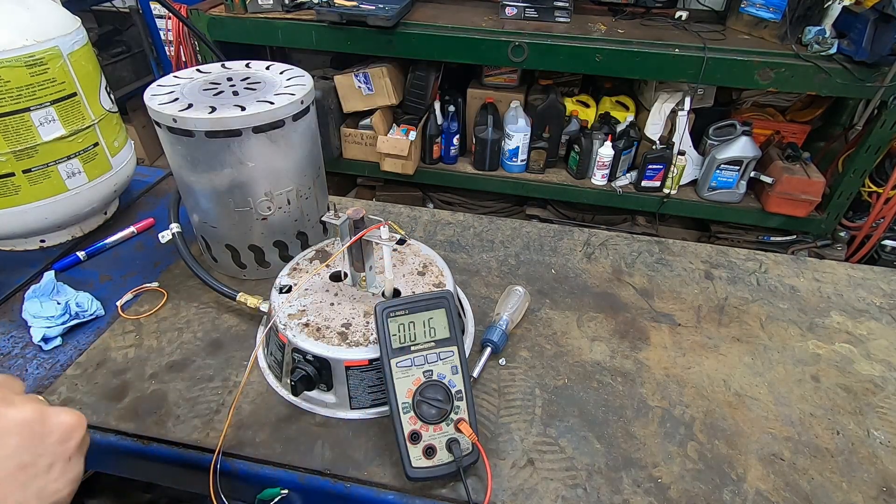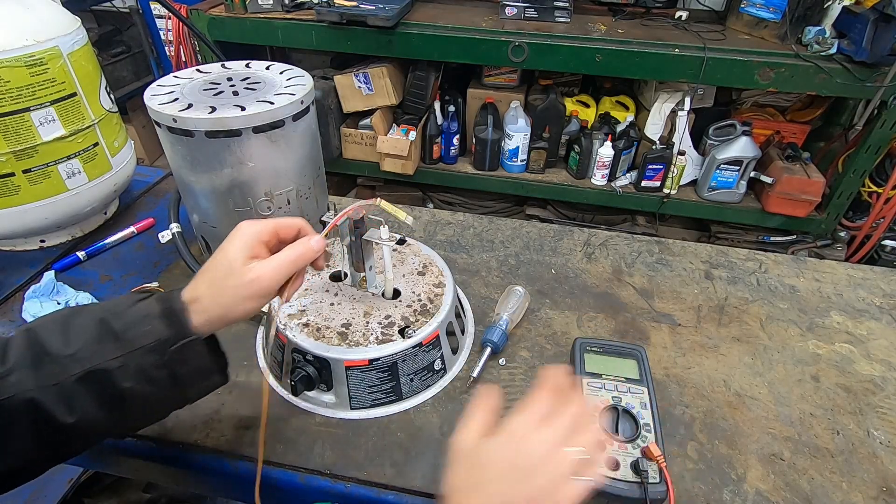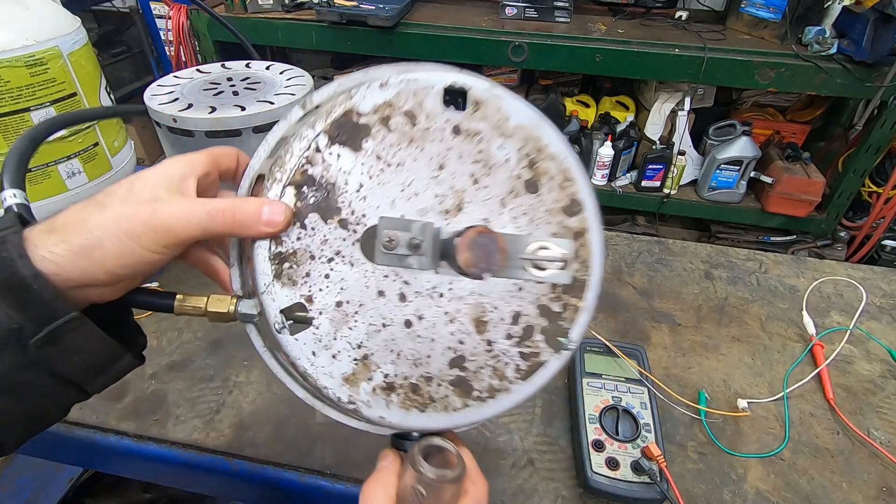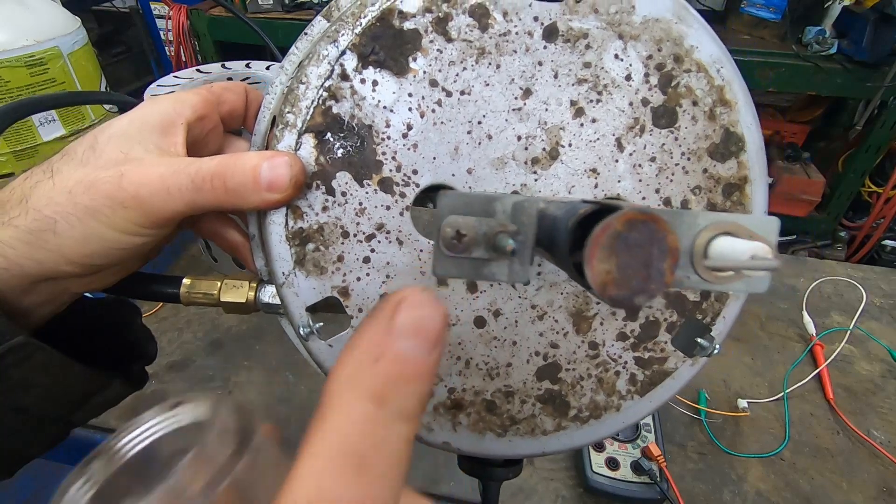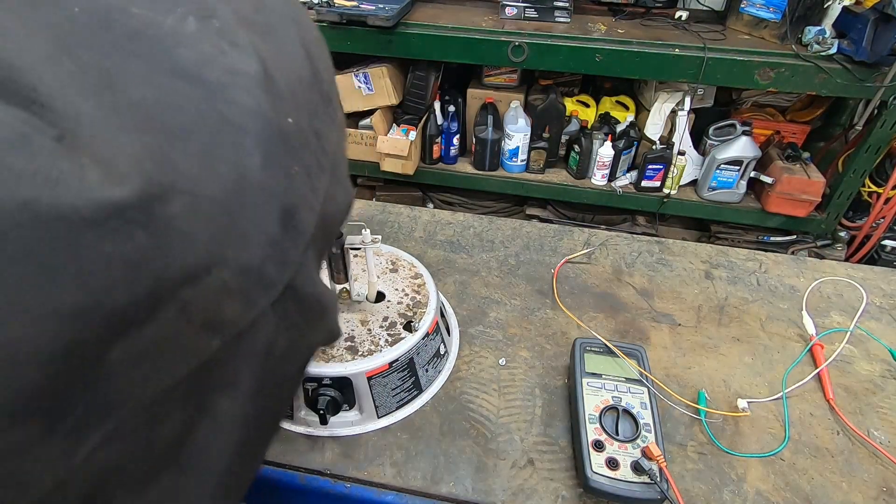We're going to take the old thermocouple out and put the new one in. So to change it, it's pretty easy. You remove that screw right there. That removes the retaining clip and we'll pull that off after.